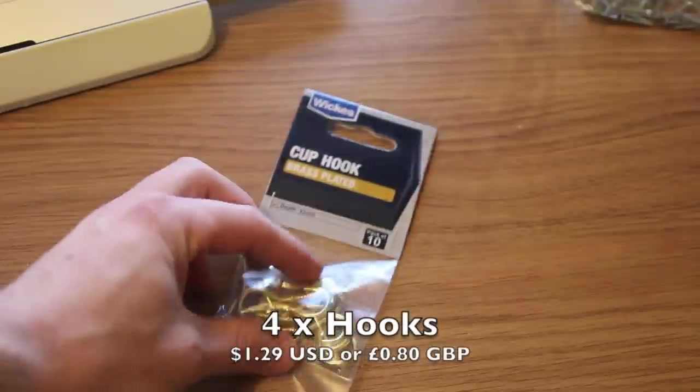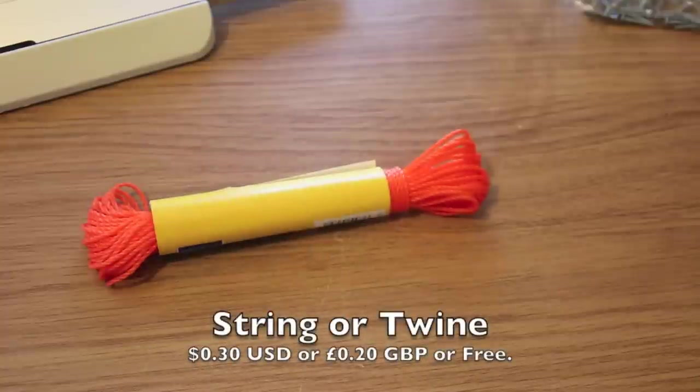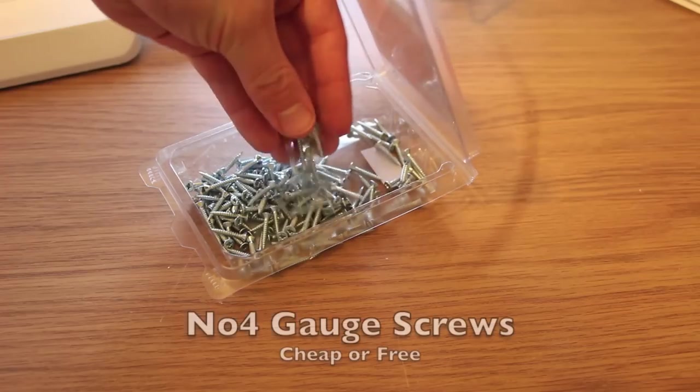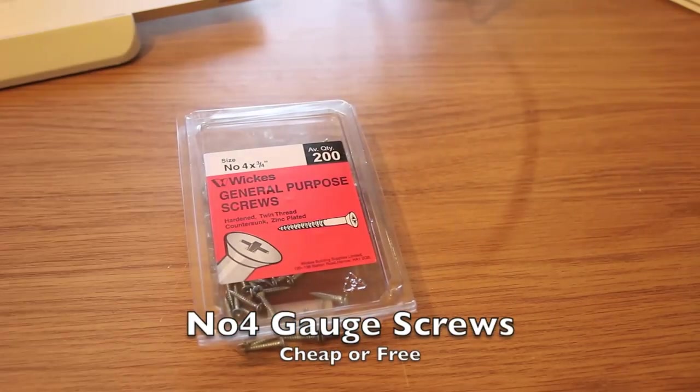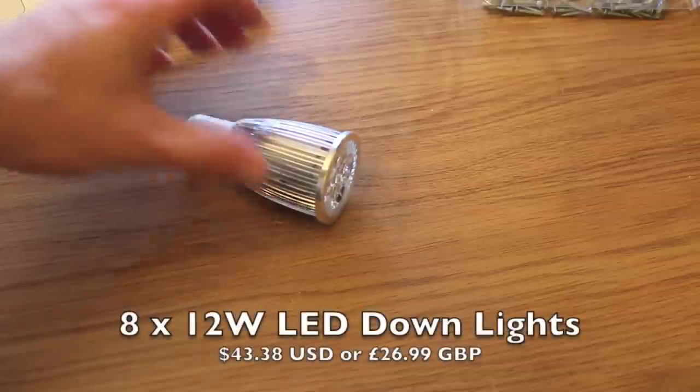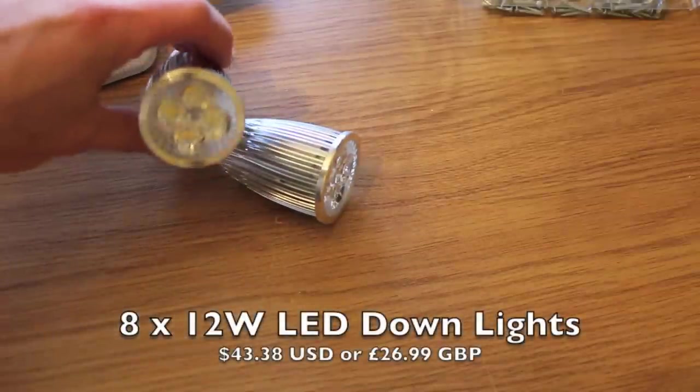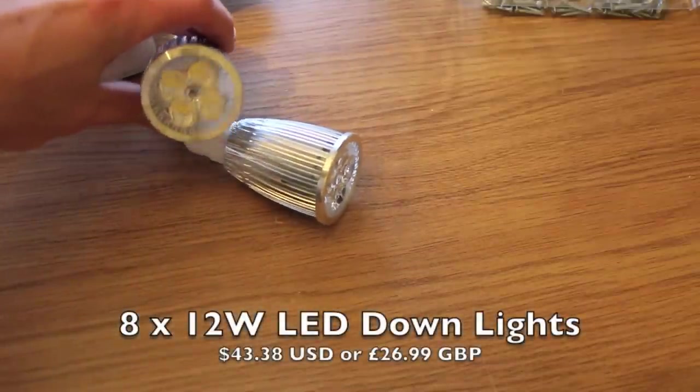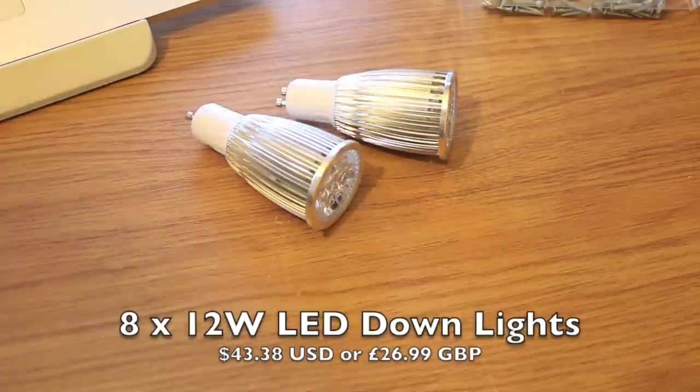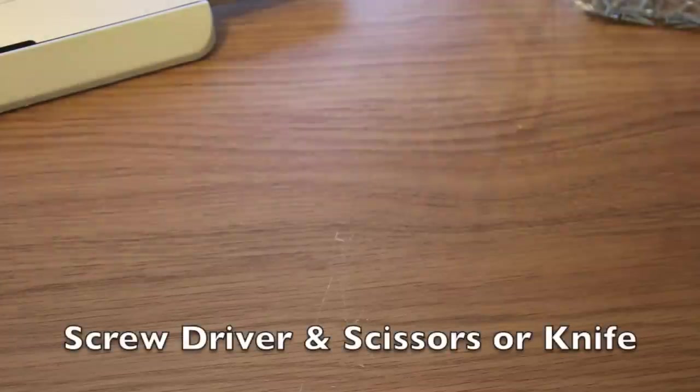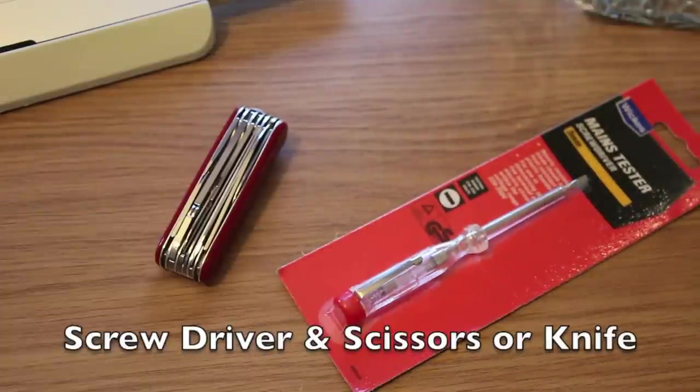And then we just need four of these hooks which cost about $1.29 each. We need some string or twine which is super cheap and then we need some number four gauge screws which can be cheap or free if you've already got some. And finally we need eight of these 12 watt LED down lights which each have four 3 watt LEDs and they're passively cooled so they're fantastic. The tools you need will just be a screwdriver and either scissors or a knife and that's everything you need.